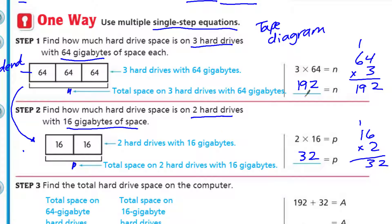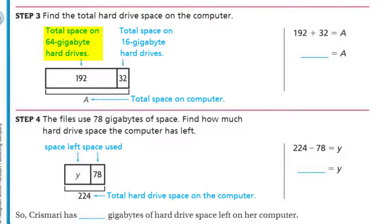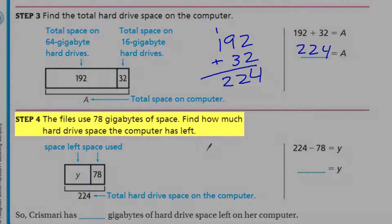We have 192 gigabytes total for those three hard drives, and 32 gigabytes for these two hard drives. Step 3: find the total hard drive space on the computer. Total space on 64-gigabyte hard drives is 192. Total space on 16-gigabyte hard drives is 32. Our variable a represents the total space on the computer. We just need to add those numbers together: 192 plus 32. That's our third step. 12, carry the 1 — 224 gigabytes of hard drive space on the computer total.